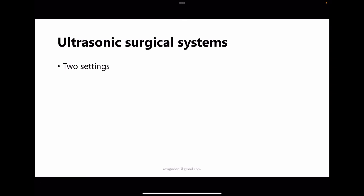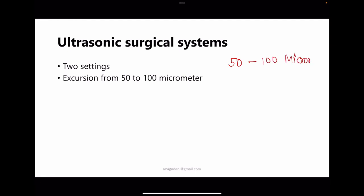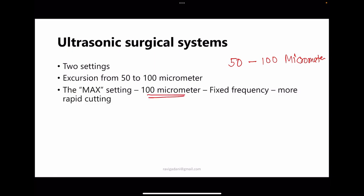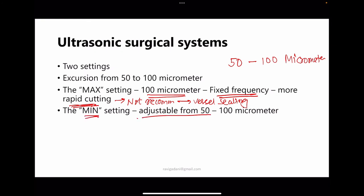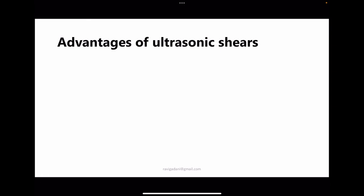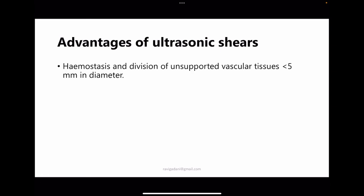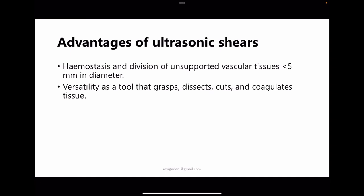Ultrasonic surgical systems typically have two settings, with excursions of 50–100 micrometers. The max setting at 100 micrometers gives fixed frequency and more rapid cutting but is not recommended for vessel sealing. The main (adjustable) setting is recommended for vessel sealing. Advantages include hemostasis and division of vascular tissue up to 5 mm in diameter, versatility as it grasps, dissects, cuts, and coagulates. It also cuts tissue — unlike some bipolar devices that require a separate scissor after coagulation.